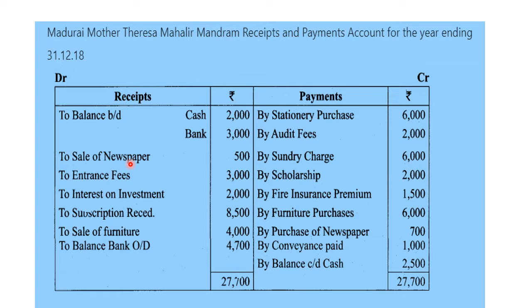If you sell a newspaper, you will receive $500. We received entrance fees of $3,000 — when the organization receives cash. Interest on investment: we will receive an interest fee of $2,000. Sale of furniture: $4,000. Subscription received: $8,500. Those are the receipt side entries.